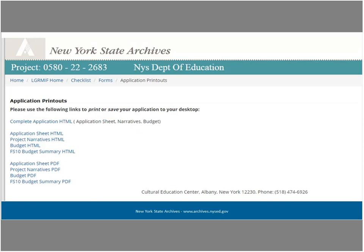You can print out a complete application or individual components of your application. To get to the application printouts, go to the LGRMIF initial application forms menu and click on the application printouts link — it's the third one from the bottom. This will take you to a page listing the parts of an application in HTML or PDF formats. Note that you can print the whole application in HTML format only. You can also use the application printouts feature to save the format on your computer. For the HTML format, put your cursor anywhere on the page, right-click, then click Save As. For the PDF format, download the document and when prompted, choose Open in Adobe, then click File and save.